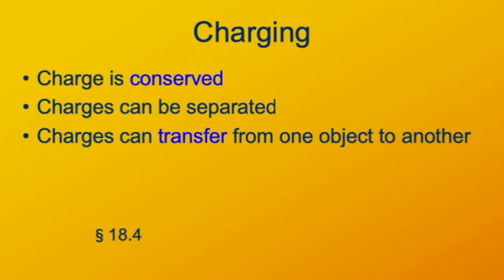Positive and negative charges can be pulled apart so that we see the charges that, when they're together, we don't see. Charges can transfer from one object to another. But charge itself cannot be created or destroyed — charge is conserved.